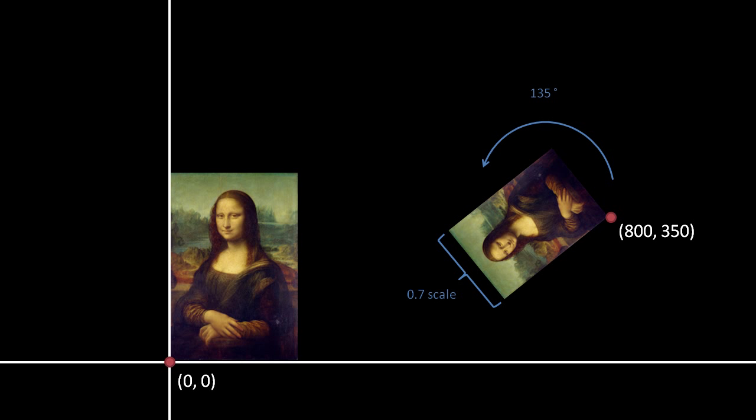We've already demonstrated how we can use nearest neighbor or bilinear filtering to resize an image, but what if we want to rotate an image? Say we render this image of the Mona Lisa scaled down by a factor of 0.7, rotated 135 degrees, and moved such that its bottom left corner is at coordinate 800, 350.